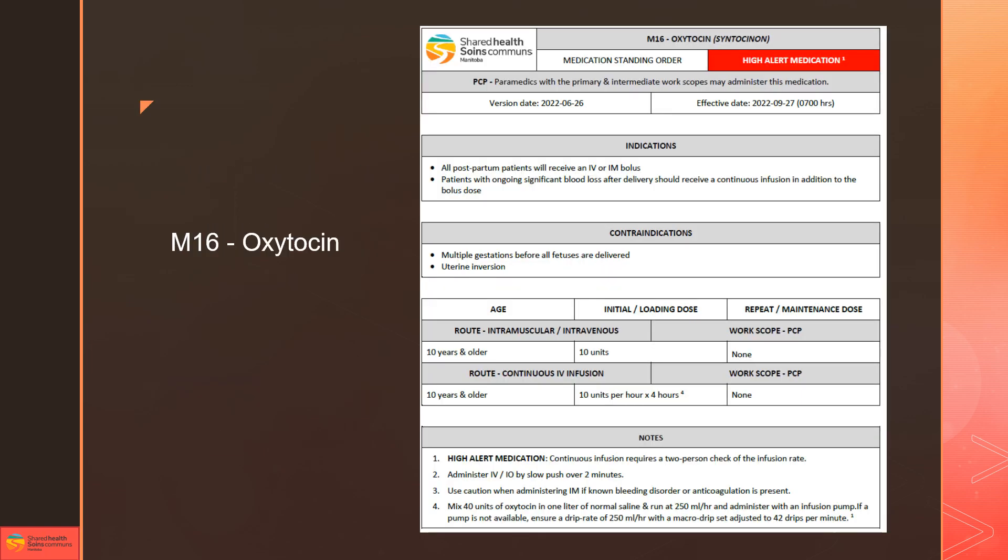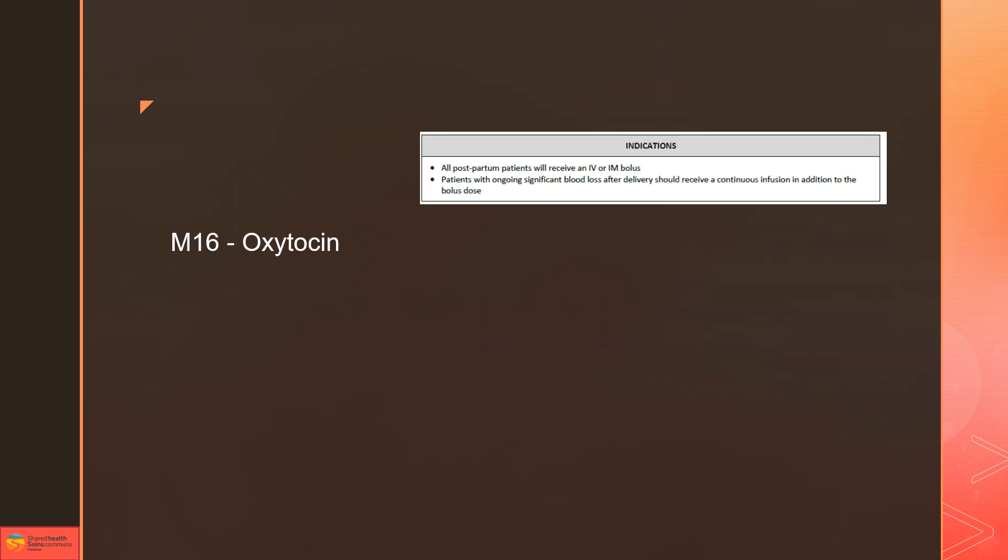The next medication we can infuse at this time using this technique is oxytocin. Indications for use of oxytocin is that we're going to originally give them that first bolus IM or IV, and then if there's still blood loss after delivery we're going to give them an infusion. Like I mentioned before, you're going to have to make that decision if you want to start your oxytocin infusion versus give TXA, because we should not be giving them both at the same time if we only have one IV line.